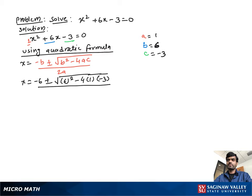Then we get x equals negative 6 plus or minus square root of 6 squared, which is 36, and negative times negative will be positive, then 4 times 1 times 3 equals 12. So we get 36 plus 12 over 2 times 1, which is 2.